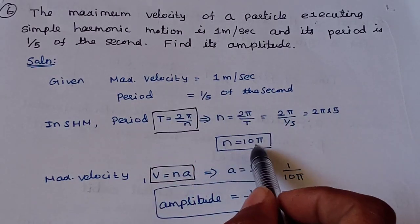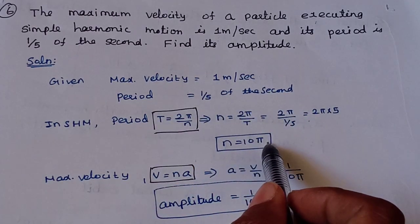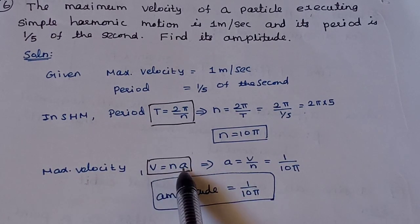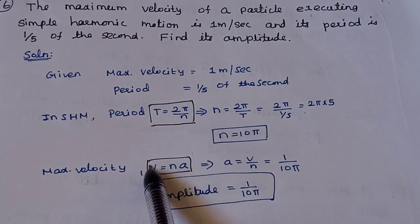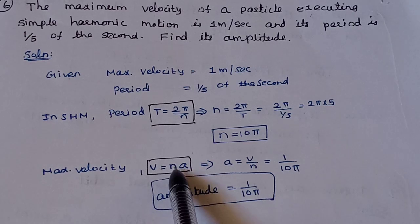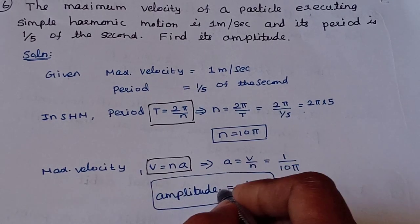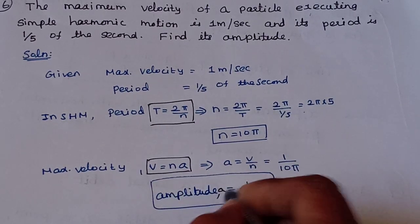So n = 10π. With V = 1 m/s, the amplitude A = V/n = 1/(10π). This is the amplitude.